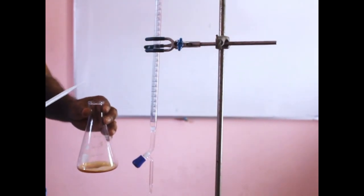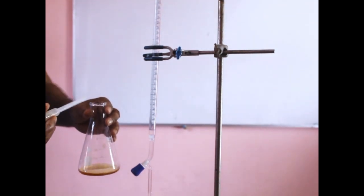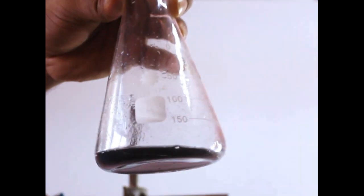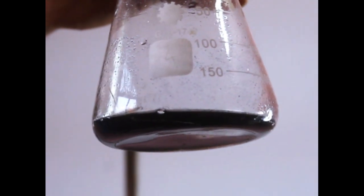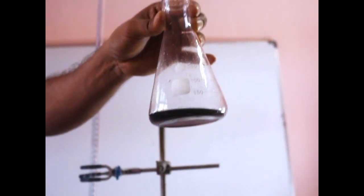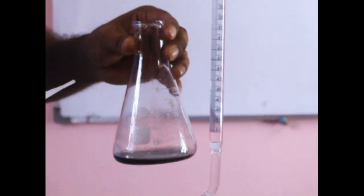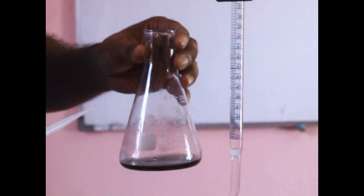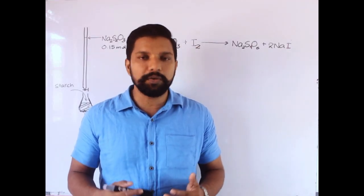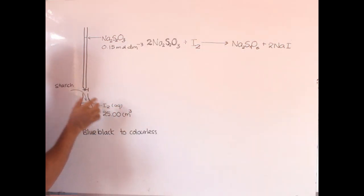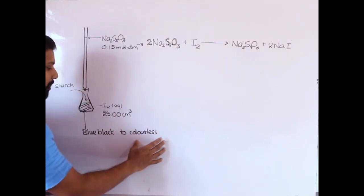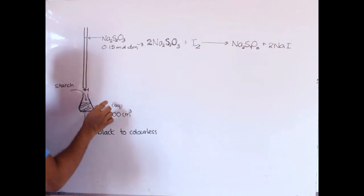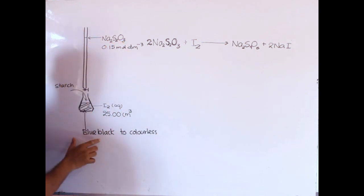At the endpoint the solution goes from blue-black to colorless. The starch must be added only when the solution is pale yellow — close to the endpoint. If starch is added at the beginning, it forms an insoluble blue-black complex with iodine which will not release iodine back into the titration, making the result wrong. You can clearly see the blue-black insoluble solid that forms when starch is added too early, making it difficult to reach a proper colorless endpoint.